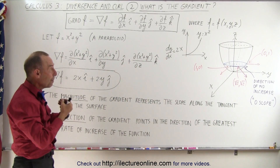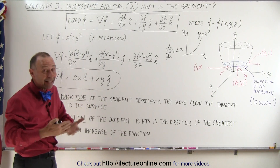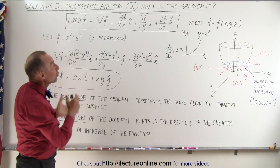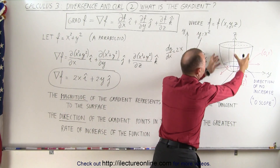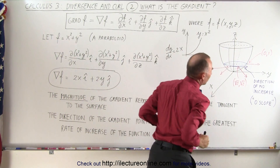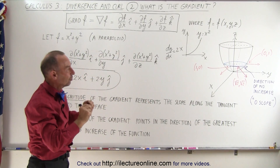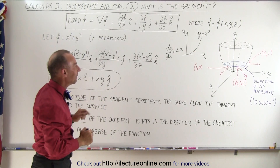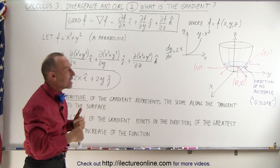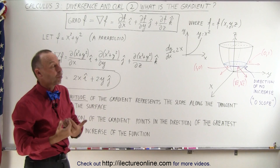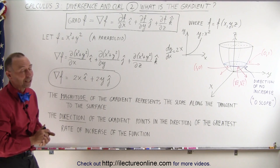In summary, the gradient is like finding the derivative of a surface — in this case a paraboloid or any shape. You find the slope of that surface anywhere along it by taking the gradient, and the direction of the gradient tells you in which direction you'll have the maximum change of the function, meaning the greatest slope will be in that direction. That's what we mean by the gradient of a scalar function.